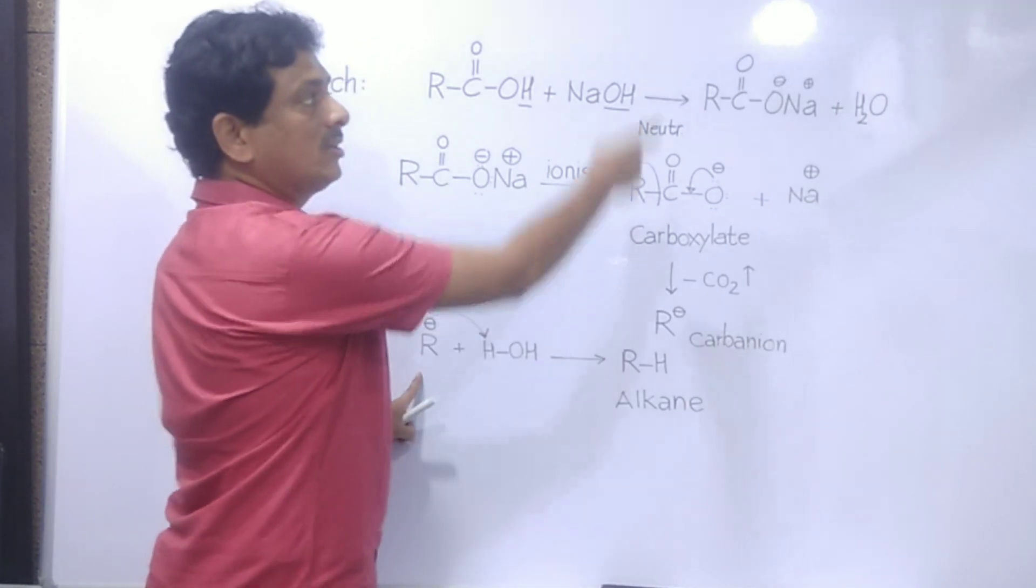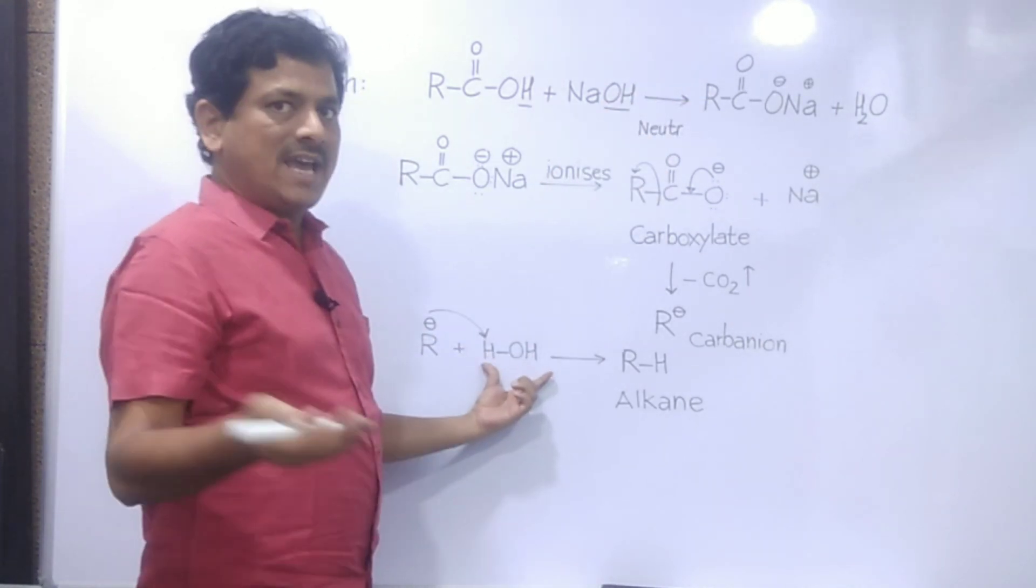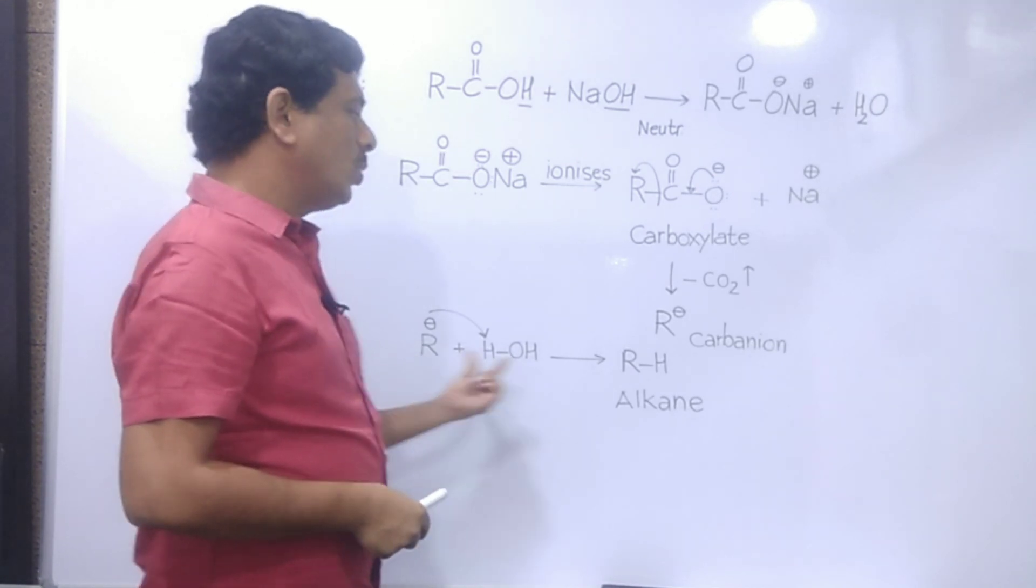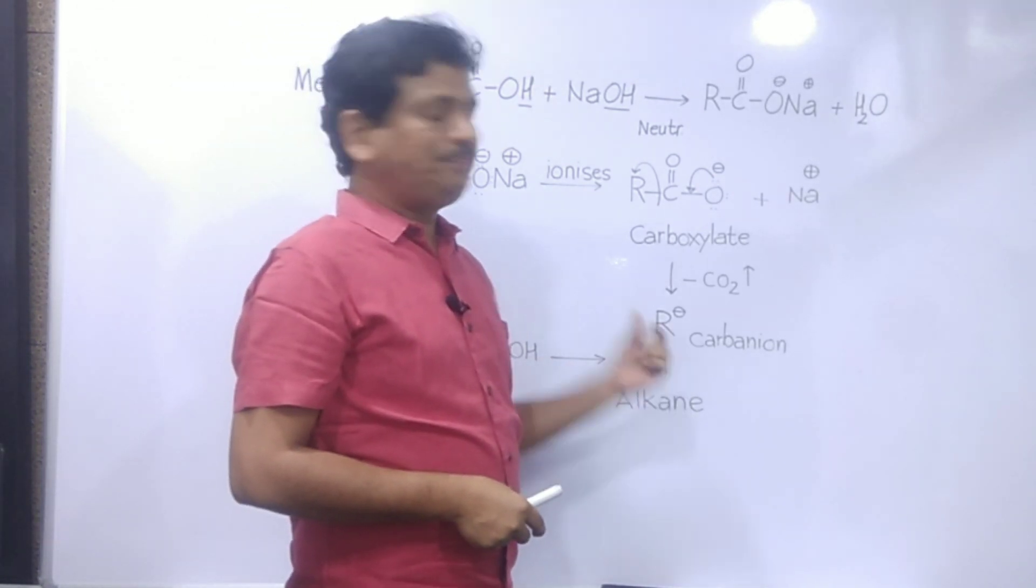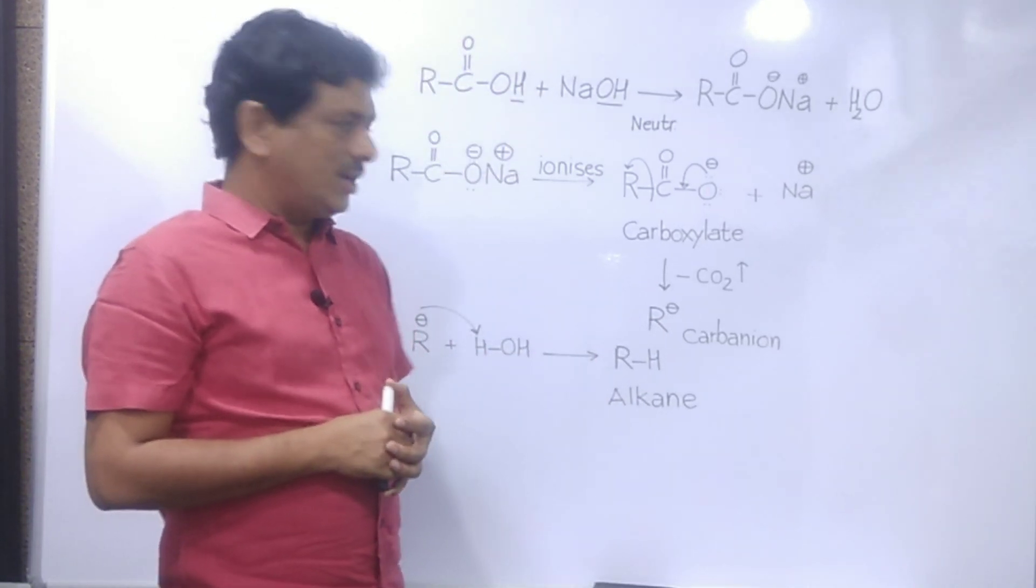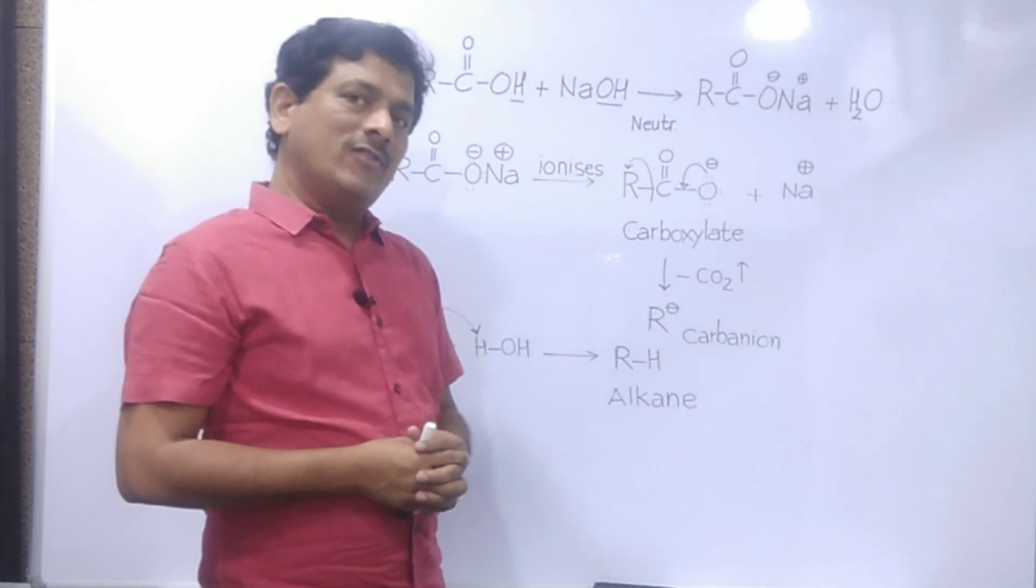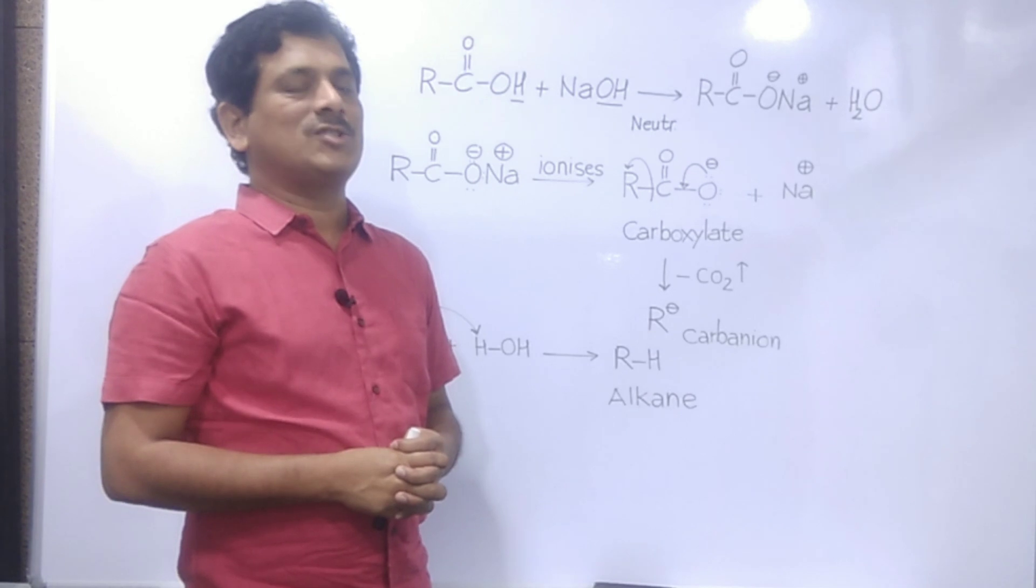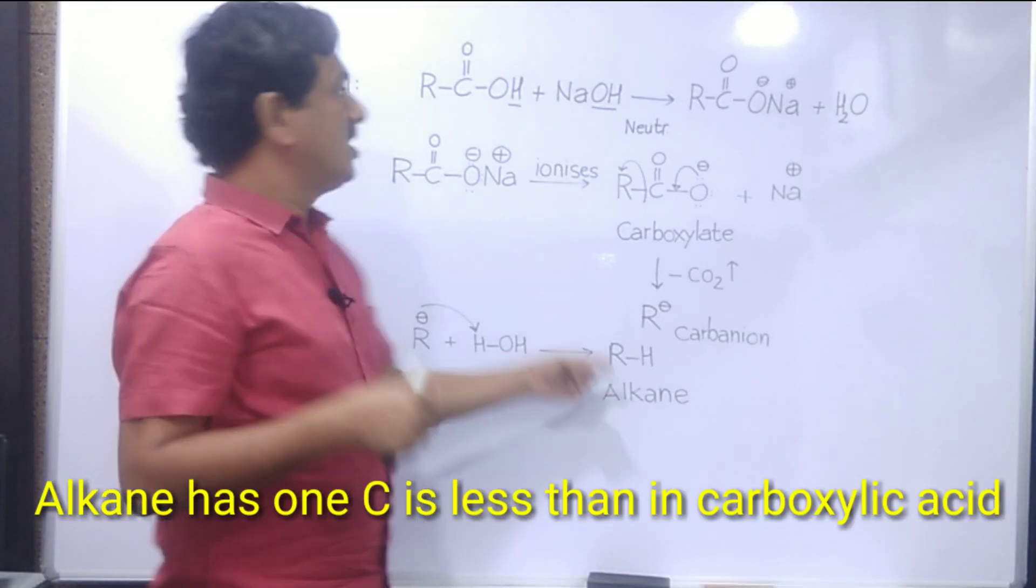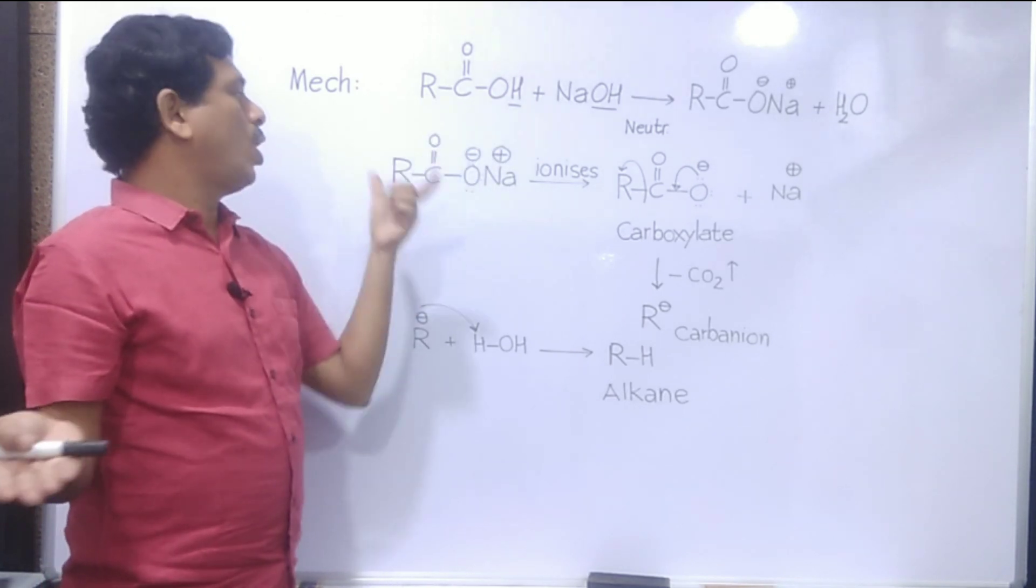So this carbanion in the final state reacts with water, which is formed in the first state. Water has acidic H, and R- accepts that H, so there is formation of an alkane. During the reaction what has happened is evolution of carbon dioxide, therefore it is decarboxylation. And when we see the number of carbons present in the alkane, we are having one carbon less than the carbons present in either the carboxylic acid or the sodium salt of carboxylic acid.